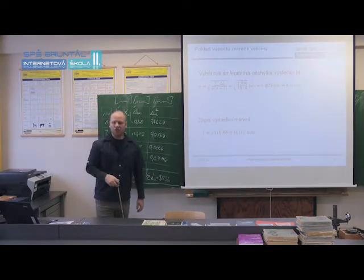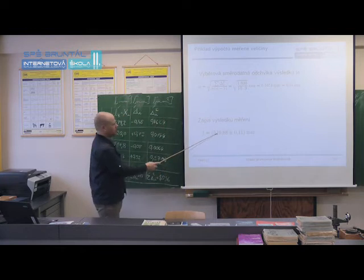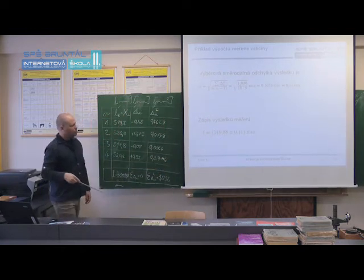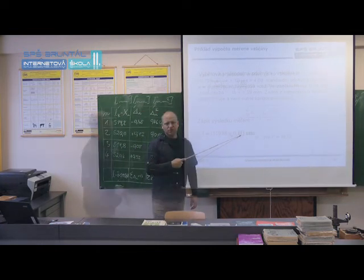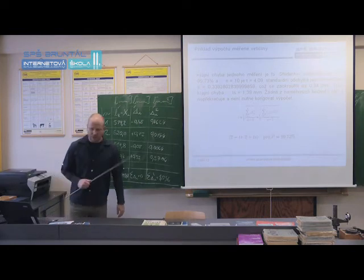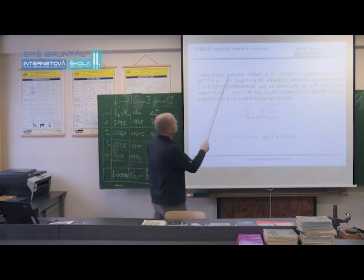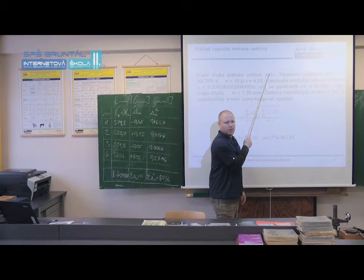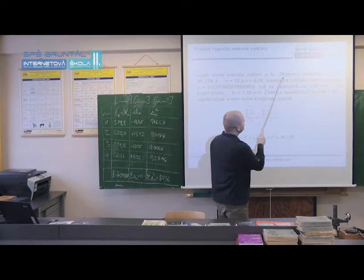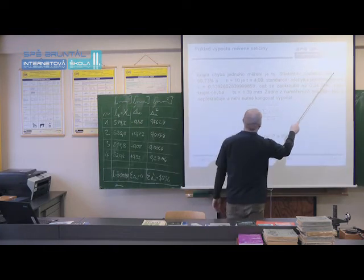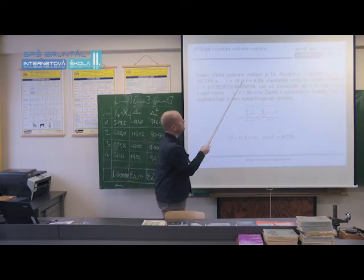And now, how is the measurement result written? The measurement result is written as 519.88, that is this value, plus minus 0.11 mm. So now, when I want to calculate the margin of error, calculation of the margin of error, we will continue in this example guys. Margin of error of one measurement is calculated as Student's coefficient, coefficient, times S. Attention, times S. Student's coefficient for P, 99.73. As we said, this is the margin of error. And the number of measurements we performed is 10, it is 4.09.